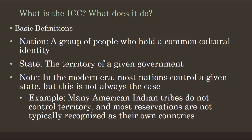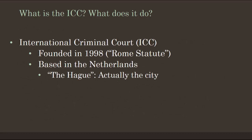The International Criminal Court is a court like you would find in a courthouse that oversees nations and international actors, and tries to keep crimes from occurring on the international level. It is based in the Netherlands and is often referred to as The Hague — which is actually the name of the city the ICC resides in.